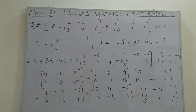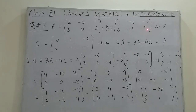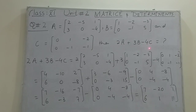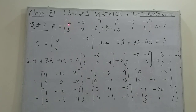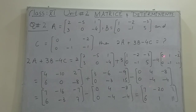Question number two of Exercise 2.1: Given matrix A equals [2, 3, -5; 0, 1, -4], matrix B equals [1, 0, -2; -1, -3, 5], and matrix C equals [0, 0, 0; 1, -1, -2; -1]. We need to find the value of 2A plus 3B minus 4C. To find this, we substitute the values of the given matrices A, B, and C into the expression 2A plus 3B minus 4C.